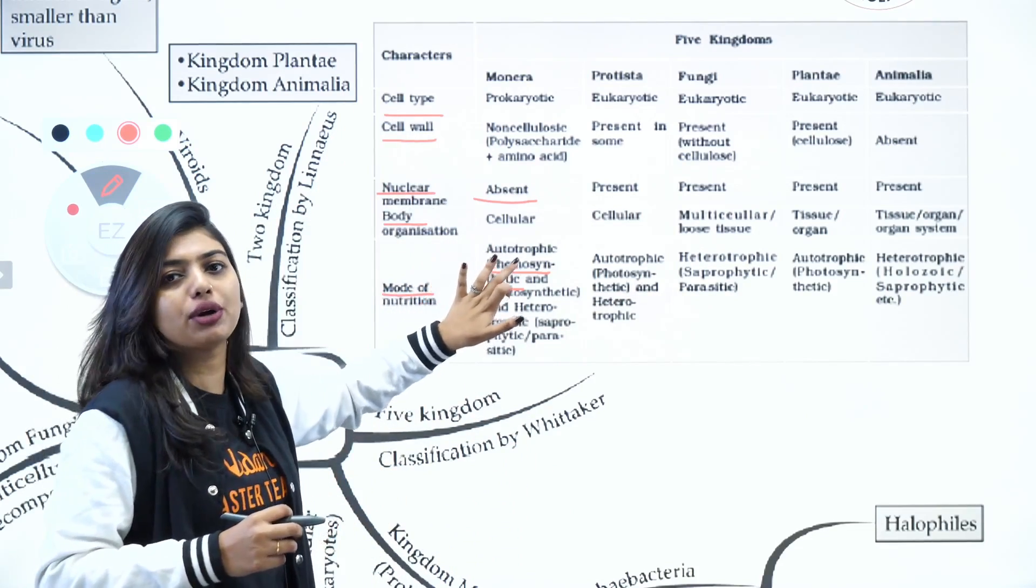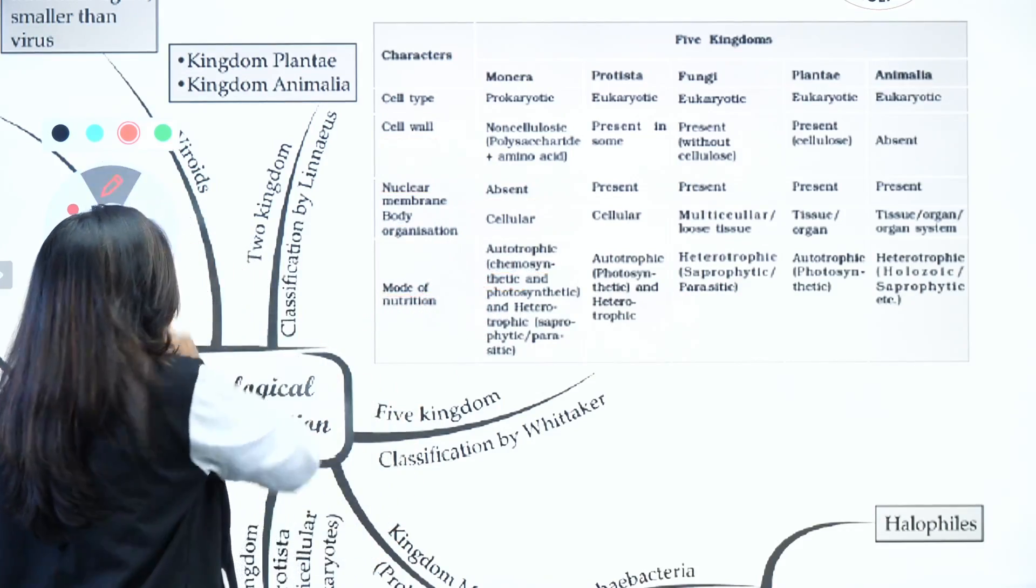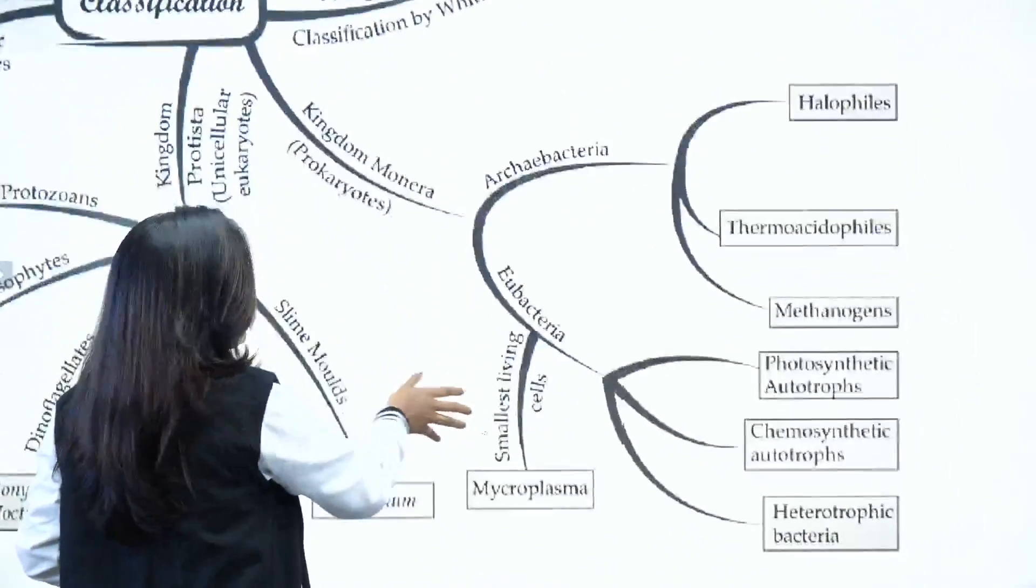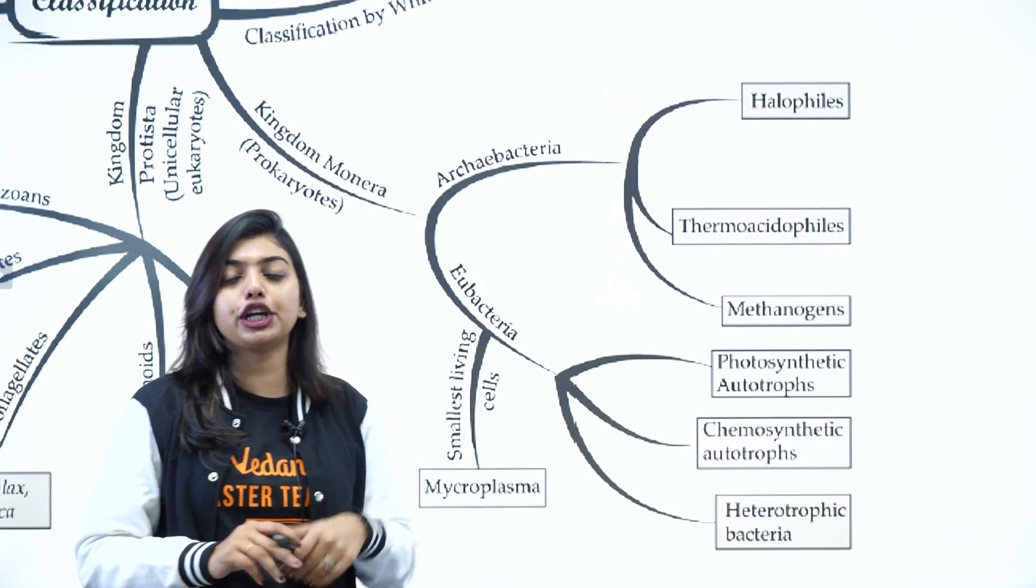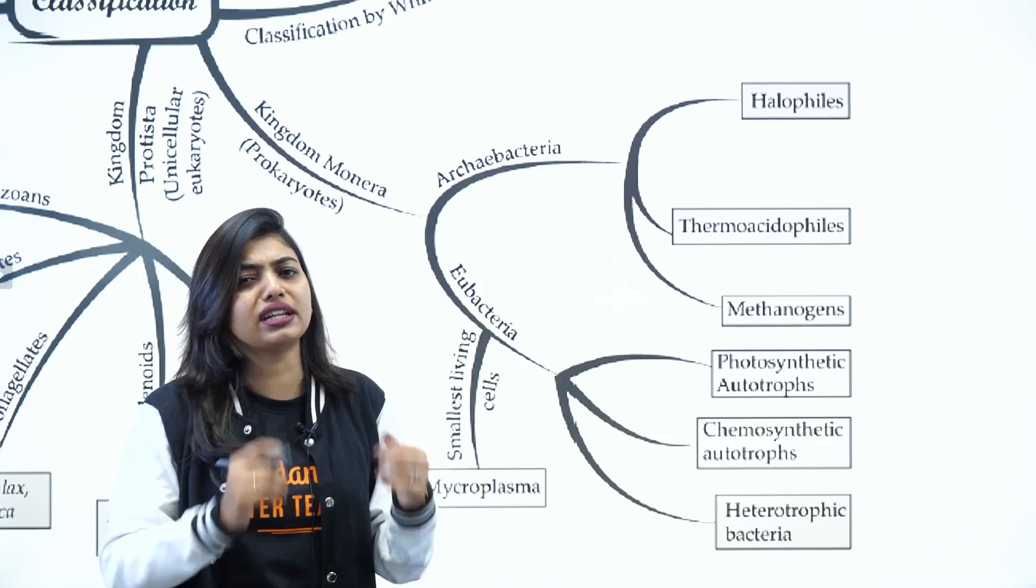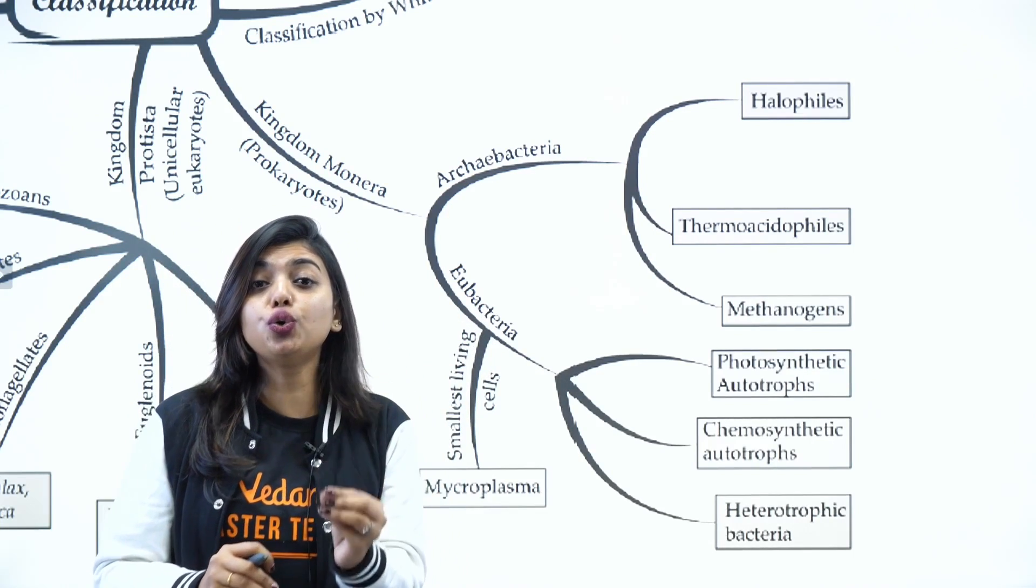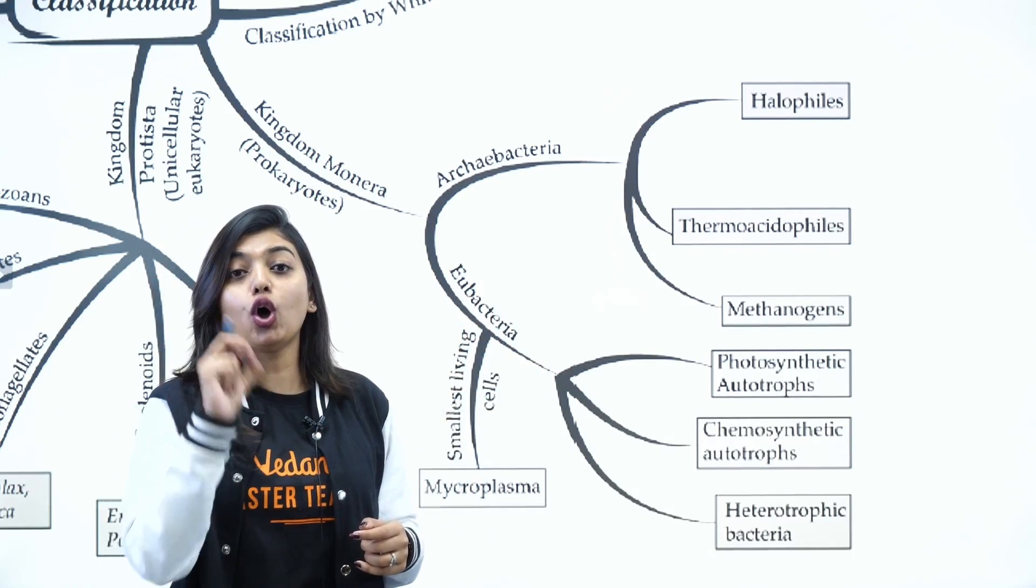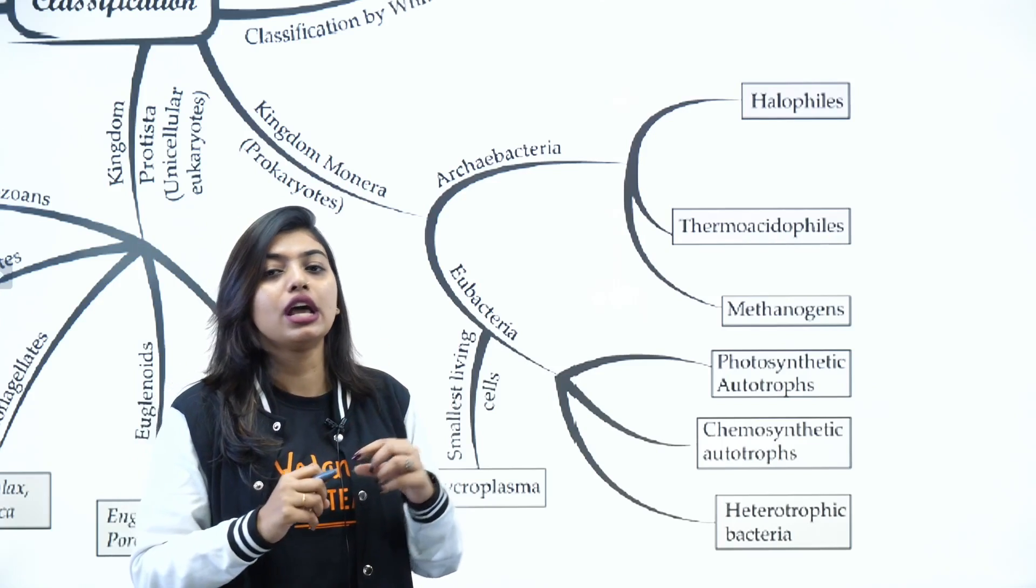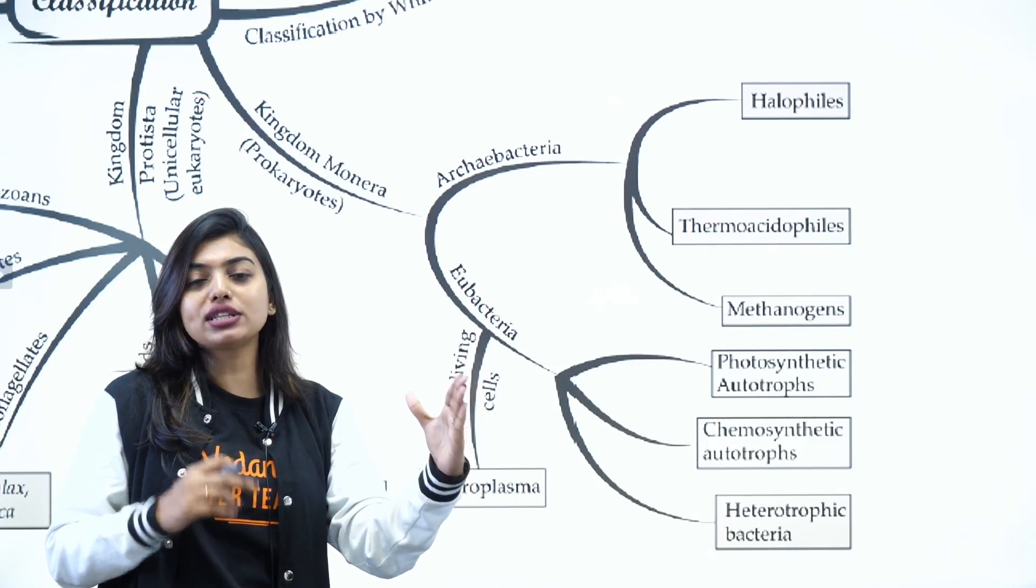This is the only box that you have to study from R.H. Whittaker's classification. Now let's try to understand Kingdom Monera. The classification started with Kingdom Monera, which was basically classified into Archaebacteria and Eubacteria. Why was this classification done? Archaebacteria has pseudomurein or false cell wall, and Eubacteria has true cell wall or murein. Because of this, the classification was done - that is presence of false cell wall and true cell wall.